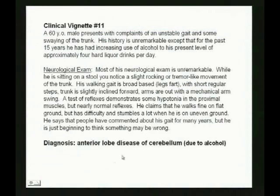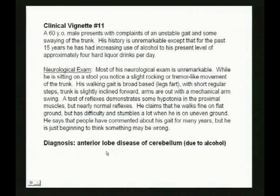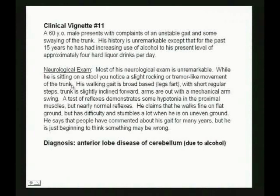Anterior lobe disease of the cerebellum. We talked about lesions of the intermediate and lateral zones causing dysmetria, dysdiadochokinesia, and intention tremor. When you drink too much alcohol, you damage the anterior lobe of the cerebellum, especially the vermal areas. The medial zone controls the proximal musculature. In this patient who's been drinking heavily, there's a slight rocking or tremor-like movement of the trunk — classic anterior lobe — and problems with the proximal musculature and balance.